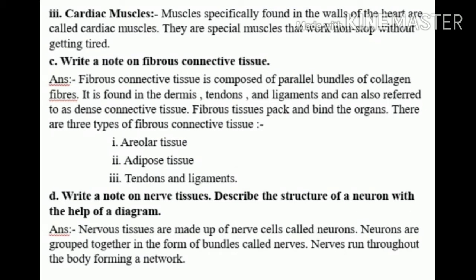Number 8c: Write a note on fibrous connective tissue. Answer: Fibrous connective tissue is composed of parallel bundles of collagen fibers. It is found in the dermis, tendons, and ligaments, and can also be referred to as dense connective tissue. Fibrous tissues pack and bind the organs. There are three types: number one, areolar tissue; number two, adipose tissue; number three, tendons and ligaments.